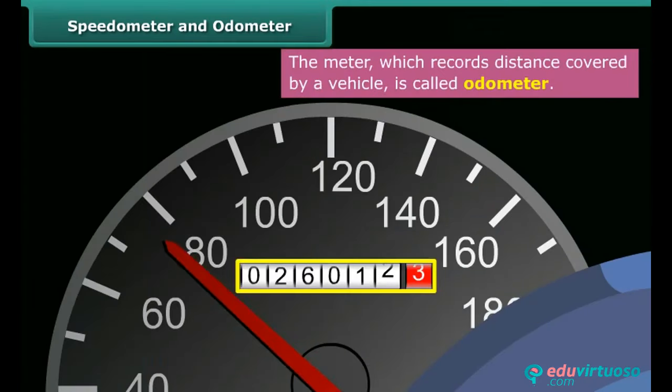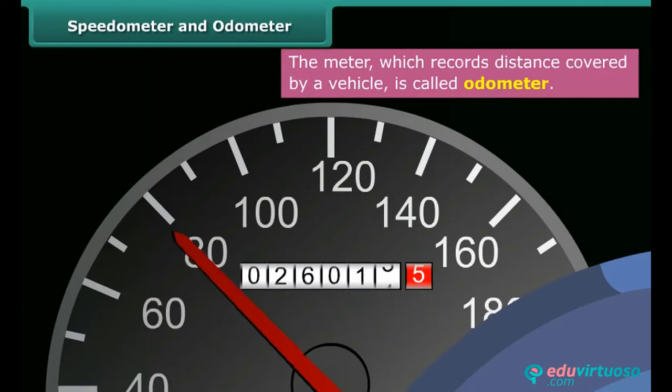There is also a rectangular box within a speedometer that has digits written on it. When the car is in motion, these digits undergo a change rather increase. This rectangular box is known as the odometer. Its readings show the distance covered by the car.